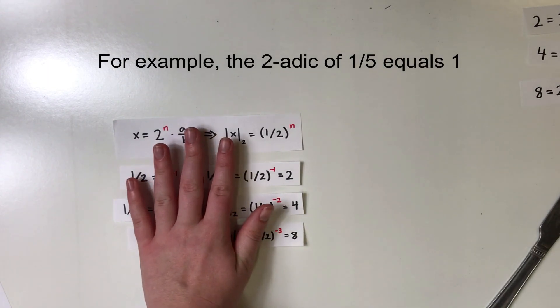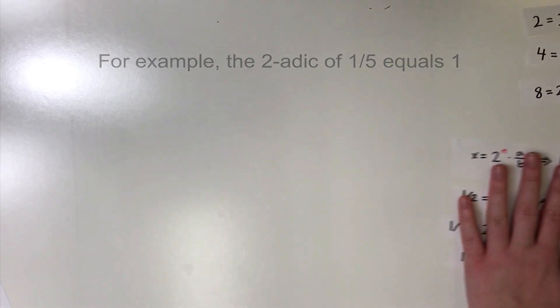Now that we established Sperner's Lemma and 2-adic valuation, we can finally prove if it is possible to split a square into an odd number of equal area triangles. Here we go.